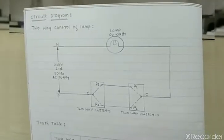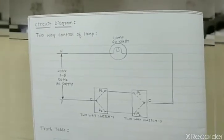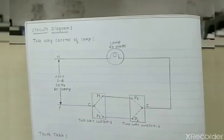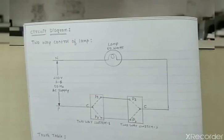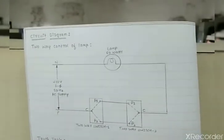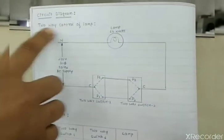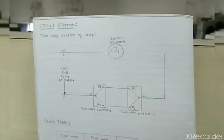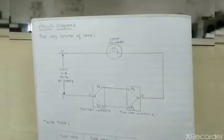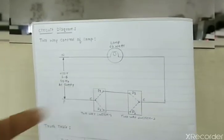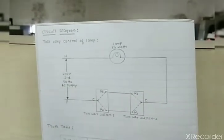Hello everyone, welcome to this laboratory. Today we are going to see two-way and three-way control of a lamp. We are going to verify the truth table as well. I hope you all know we are using two-way control lamps in staircases and similar places. Today we will see the connection and how it is going to operate.